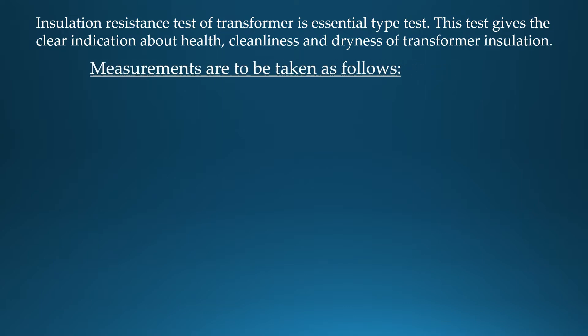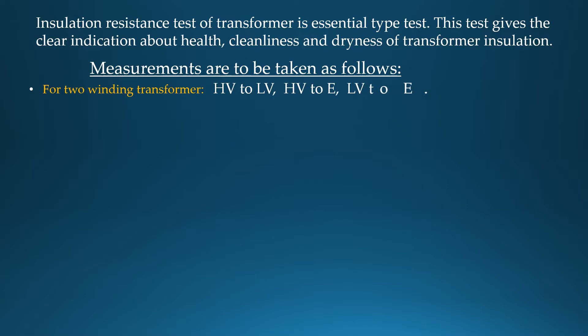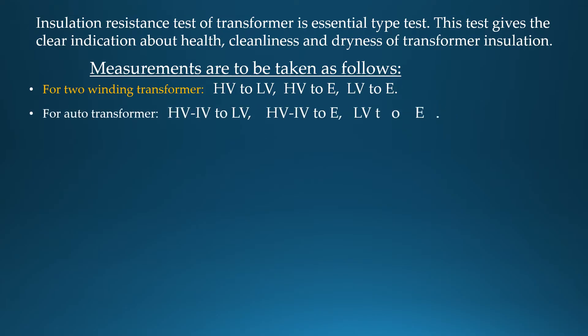Measurements are to be taken as follows. For two winding transformers: HV to LV, HV to Earth, LV to Earth. For auto transformers: HV/IV to LV, HV/IV to Earth, LV to Earth.